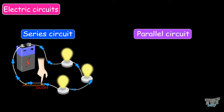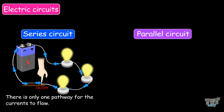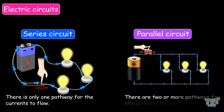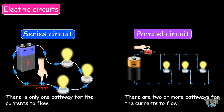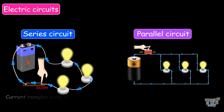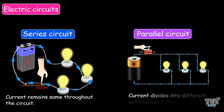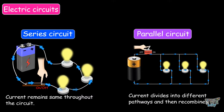Now let's learn the difference between series and parallel circuits. In a series circuit, there is only one pathway for the current to flow, whereas in a parallel circuit, there are two or more pathways. In a series circuit, the current remains the same throughout the entire circuit, whereas in a parallel circuit, the current divides into different pathways and then recombines.